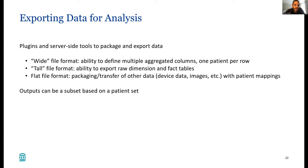We've done a number of variants — making the tall file more compact and easier to work with in R and Python. You can also create subsets: drag over a patient set and export a subset of the fact table for your patients in your query. That was used in the biobank disease challenge for phenotype development. And lastly, the fact that you're storing pointers to files in the fact table means we can pull in data that lives in raw format, package it up, and give it to investigators — like device data and images. Outputs can be a subset based on a patient set.